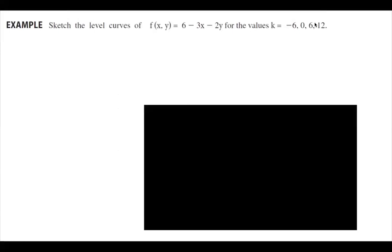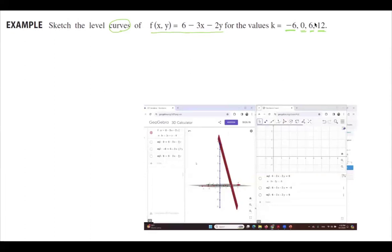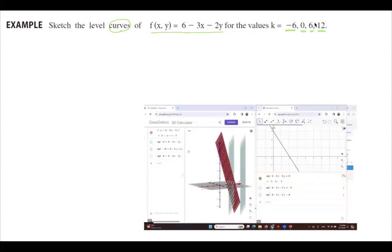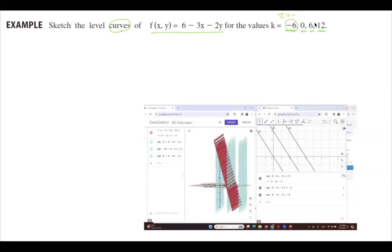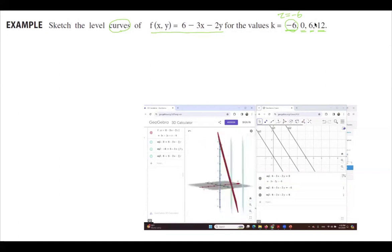In this example, I give you a simple object — a plane. I ask you to find the level curves when k is negative 6, 0, 6, and 12. If you graph this 3D object, as you can see, it's a plane. Then you start slicing it using fixed z values. When k is equal to negative 6, it means z is equal to negative 6, and you start slicing this three-dimensional plane by other planes. The projection in the xy-plane gives lines.